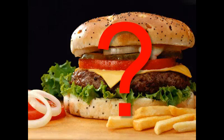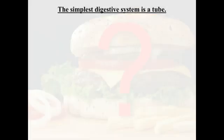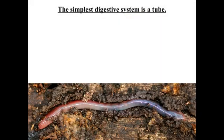Before we start talking about our own digestive system, it's useful to look at something really simple. Our friend the earthworm is about as simple as you can get for a digestive system. An earthworm's digestive system is very much like ours — a little bit simpler. It's basically a tube.